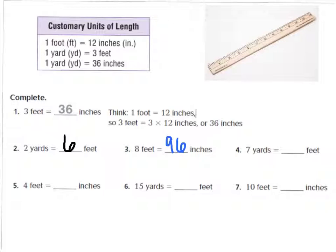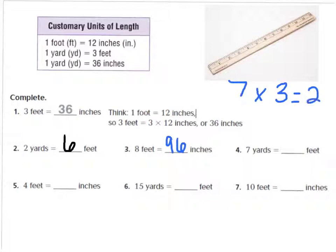Number 4 says 7 yards equals how many feet? I know that 1 yard equals 3 feet. So if I have 7 yards, then 7 yards times 3 feet equals 21. So 7 yards equals 21 feet.